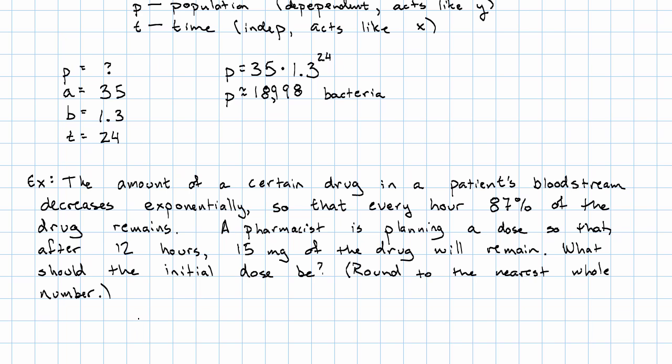Our variables here are D, the amount of the drug. That's our dependent variable. That's the thing that's being multiplied by something, so it's going to act like Y in our form. And then T is the time in hours. That's our independent variable.